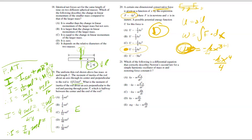All right, so let's look at 21. On time, this is a little bit longer but I think this one's going to be okay. Which of the following is a differential equation that correctly describes Newton's second law for a simple harmonic oscillator?